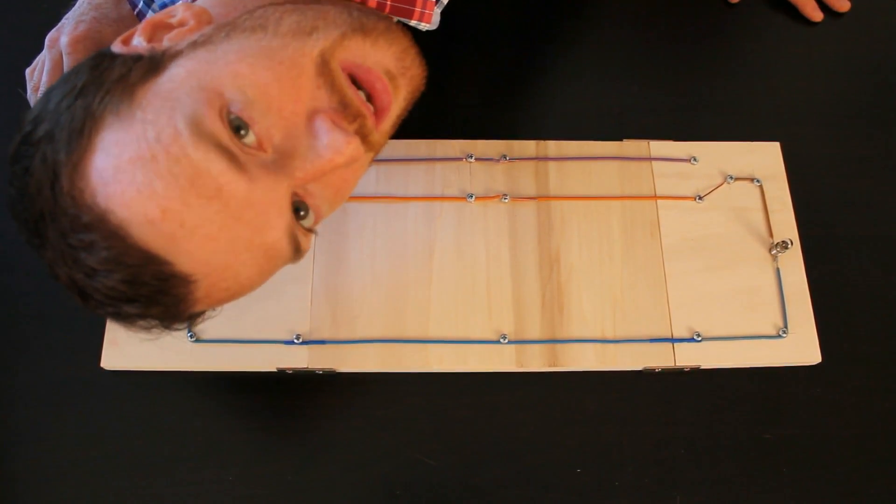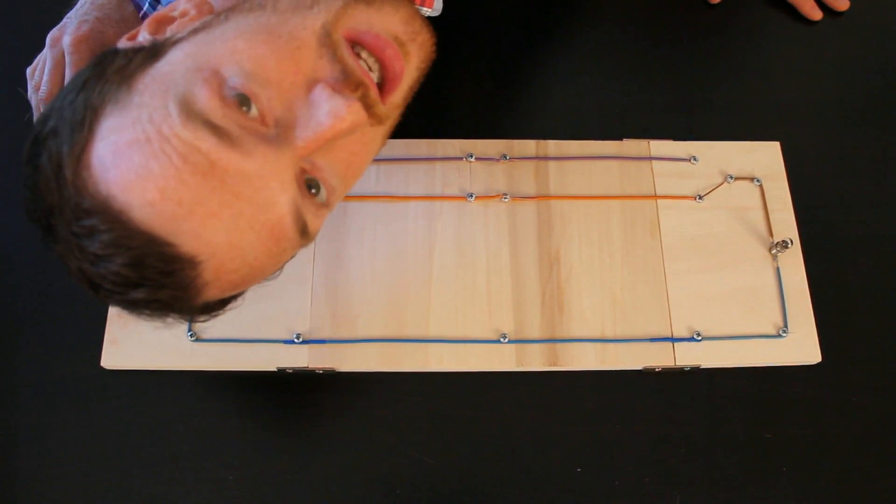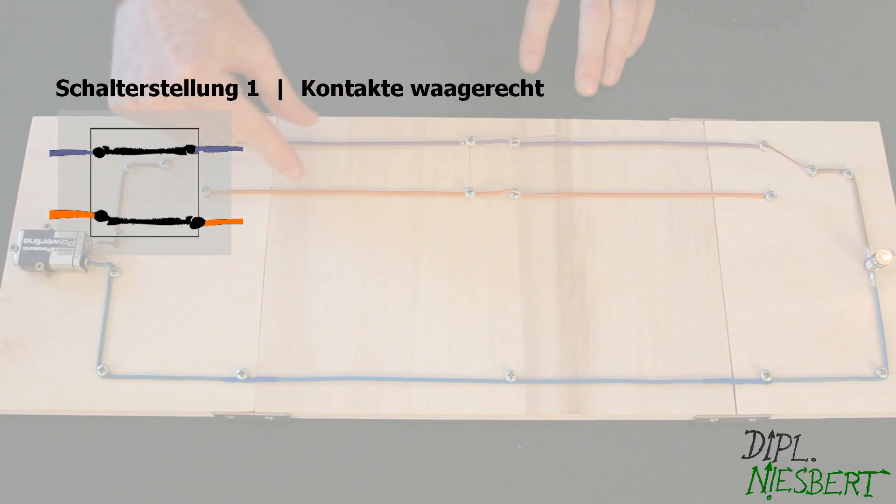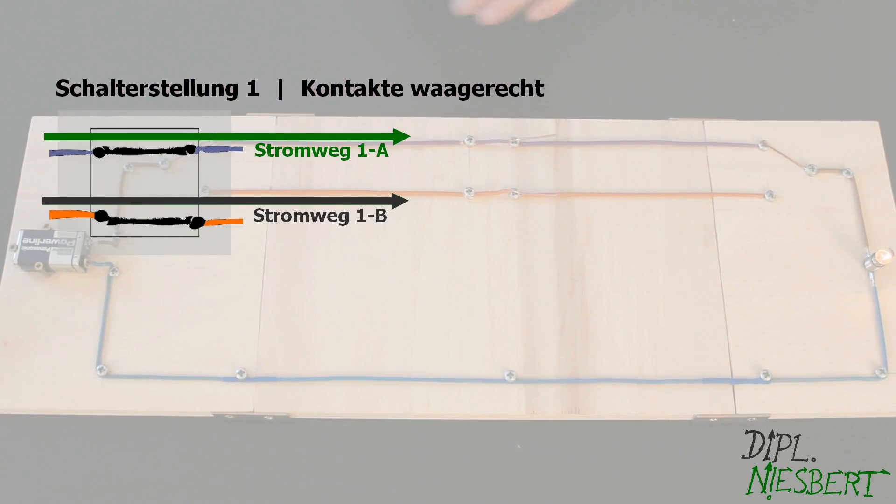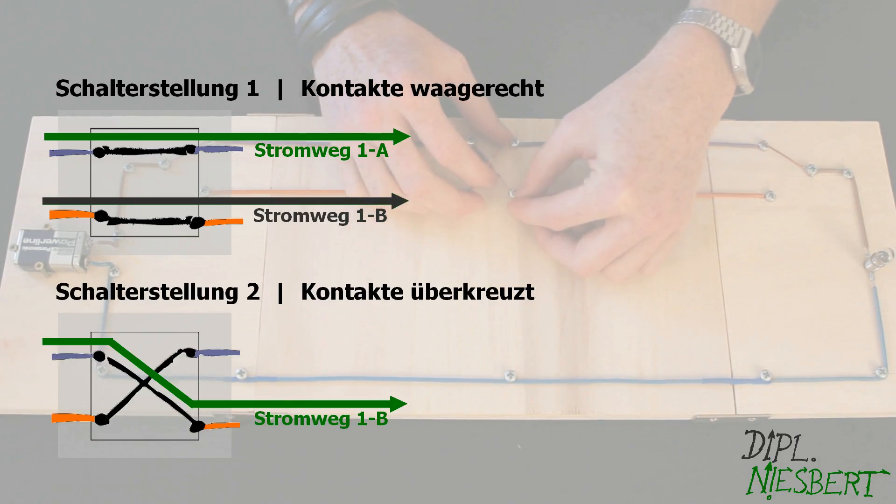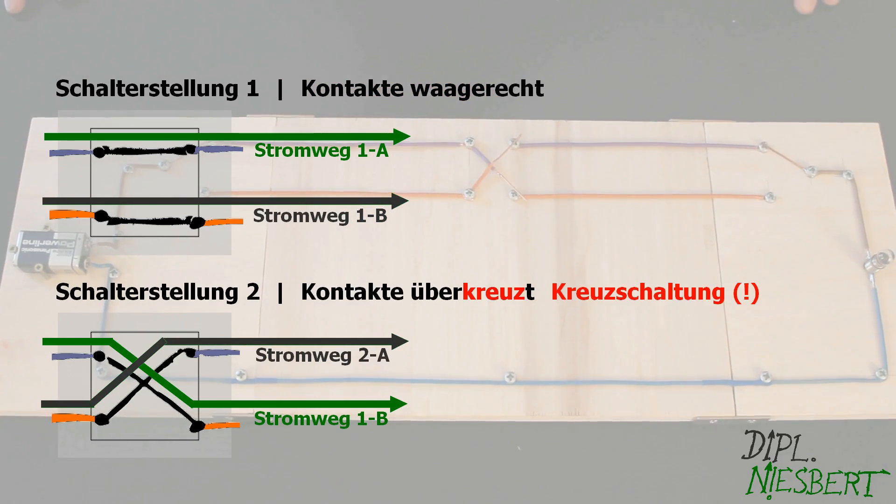Die Kreuzschaltung ist wirklich nur eine Erweiterung der Wechselschaltung. Kann ja nicht so schwer sein, oder? Der Kreuzschalter hier in der Mitte hat genau zwei Stellungen. Erstens, beide Kontakte sind waagerecht. Zweitens, die Kontakte sind überkreuzt. Aha, daher der Name Hase.